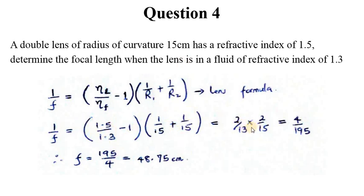This is actually 2 over 13 from this part times 2 over 15 from this part, giving us 4 over 195. But remember we want F, not 1 over F, so F is 195 over 4, which is 48.75 centimeters. This is the value of F when the lens is in the fluid.